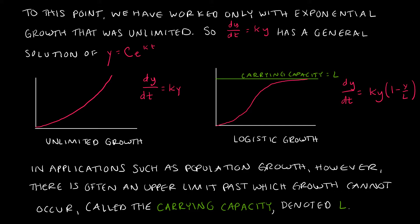Now we're going to take a look at applications like population growth where there's often some upper limit. There's only so much growth that can occur, and after that point, growth will not occur. That upper limit is called the carrying capacity and is denoted with the letter L.